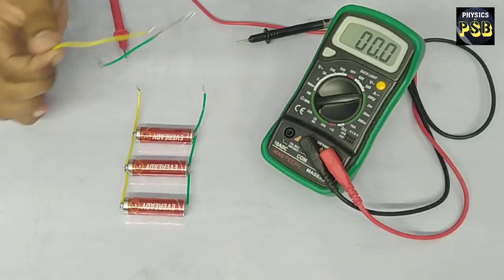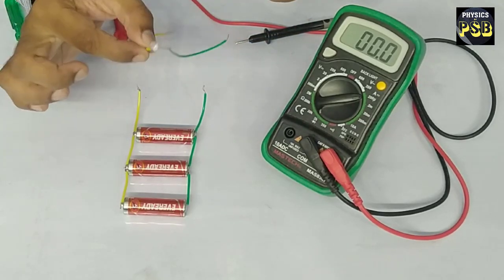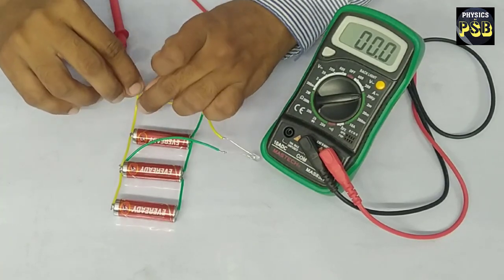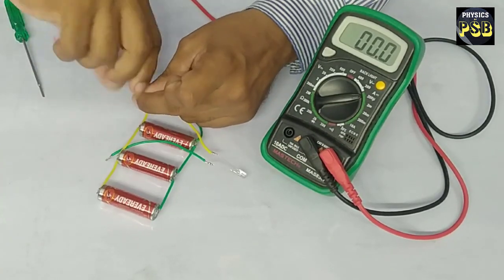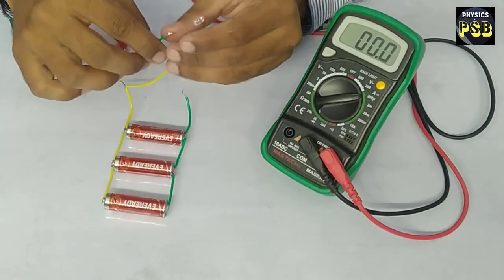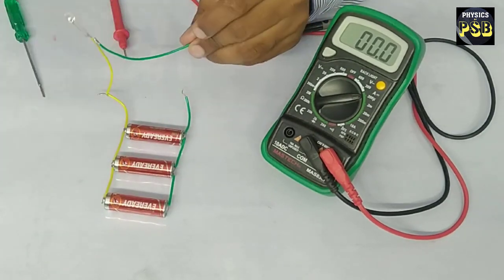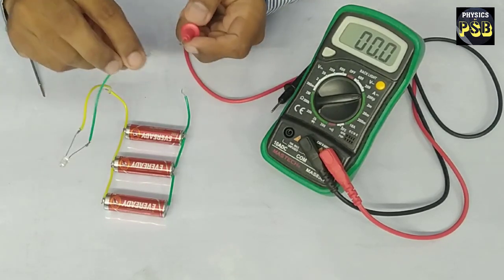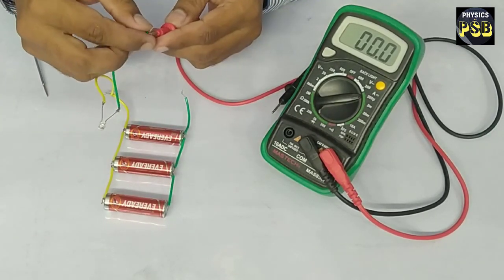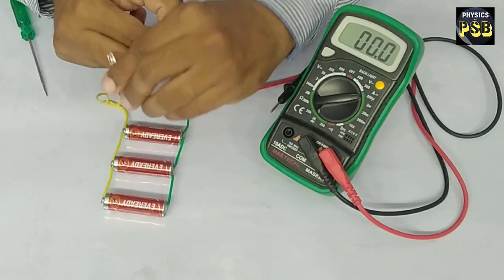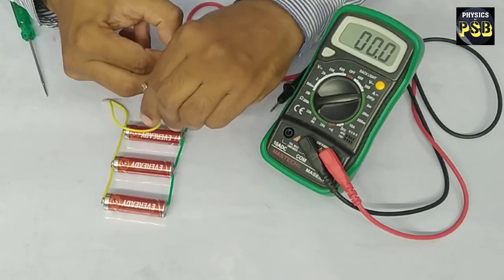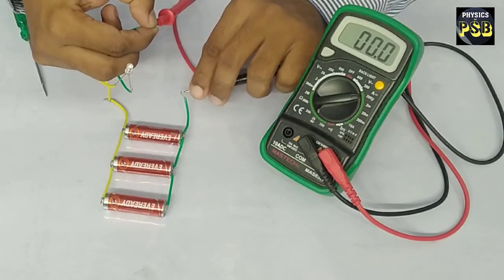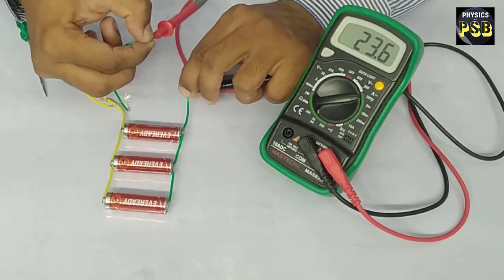Now I will include a load. I will connect the anode of this LED to the positive terminal of this battery, and the cathode of this LED is left as such that I am going to connect to the red probe.